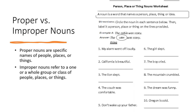Number two: 'California is beautiful.' Tell me what the noun is. That's right — California. Now, is that a proper noun or an improper noun? It is a proper noun because it is telling us the name of the state. Excellent work. Number three: 'The lion slept.' What is the noun in that sentence? That's right — lion. Is it a proper noun or an improper noun? That's right — improper noun, or a common noun. Number four: 'The couch was comfortable.' That's right — couch is the noun. It is an improper noun.